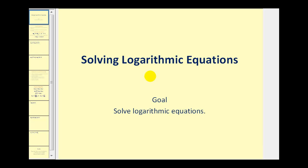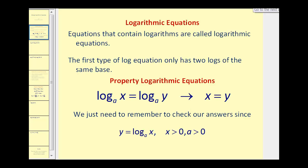Welcome to a lesson on solving logarithmic equations. There are really two types of log equations we're going to look at in this video. The first type is when you have an equation that has only two logs of the same base. If we set the logs equal to each other, it follows that the argument of the first log must equal the argument of the second log. So we'll set those equal and then solve. We do have to check our answers because the argument of the log has to be greater than zero — if we obtain a value that makes this less than or equal to zero, we would have to exclude it.